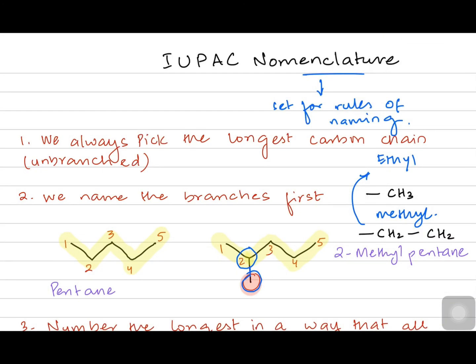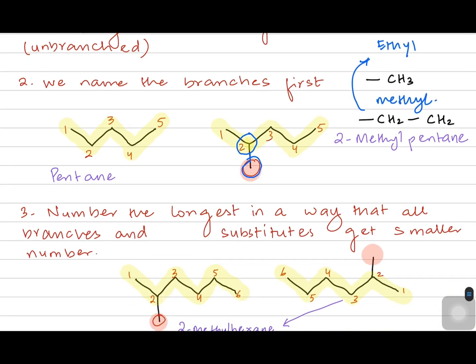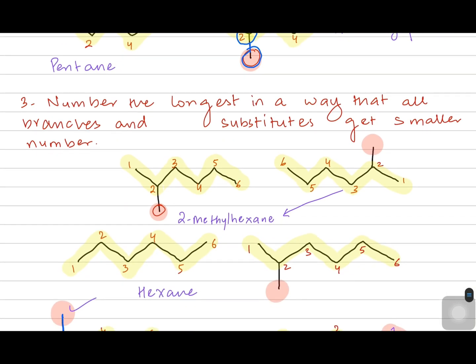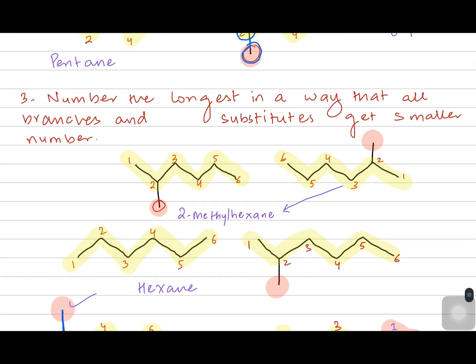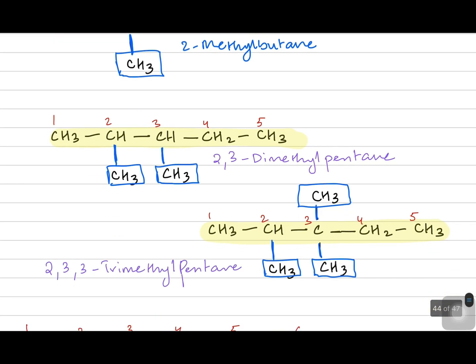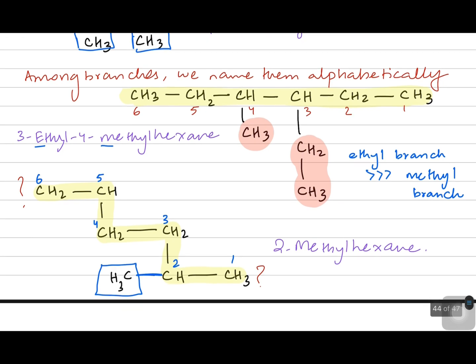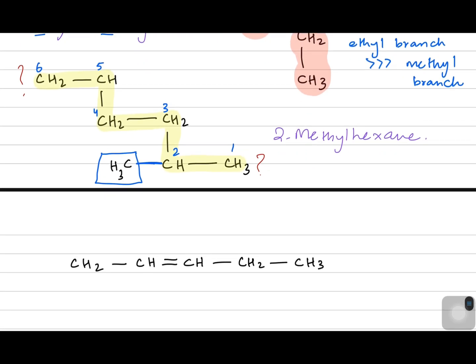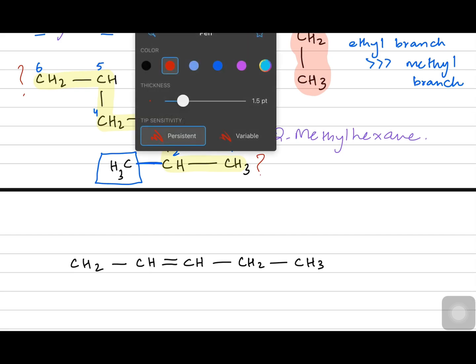In the previous video we were talking about the formula for IUPAC nomenclature. The first rule was finding the longest carbon chain — the unbranched chain — and then numbering it from the side closest to the branches. Branches could be one carbon like methyl or two carbons like ethyl. We practiced naming with skeletal and structural formulas, including structures with one or two branches, and branches combining methyl and ethyl.